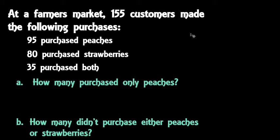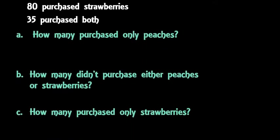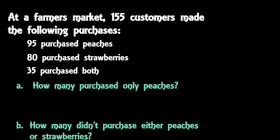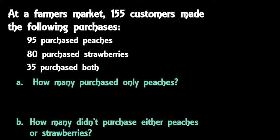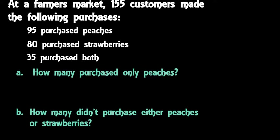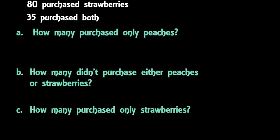For this video we're going to do an application involving a Venn diagram. A lot of times if you have a problem like this it is easiest to draw the Venn diagram first and then answer the questions based on it. At a farmers market, 155 customers made the following purchases: 95 purchased peaches, 80 purchased strawberries, and 35 purchased both peaches and strawberries. We'll ask: how many purchased only peaches, how many didn't purchase either, and how many purchased only strawberries.